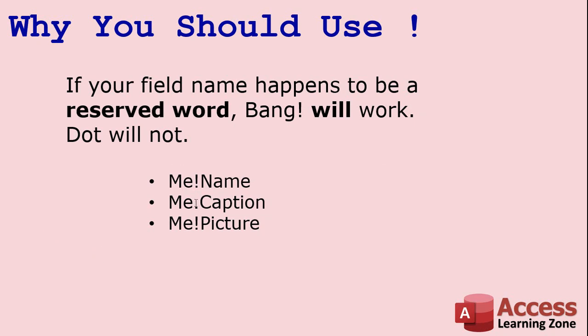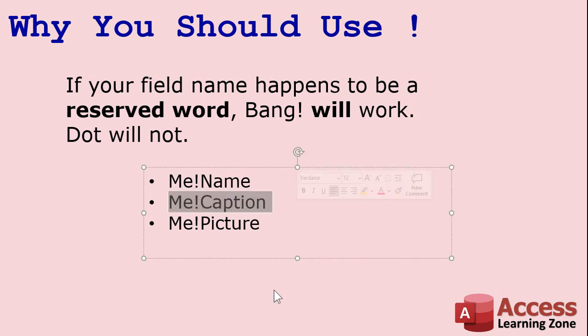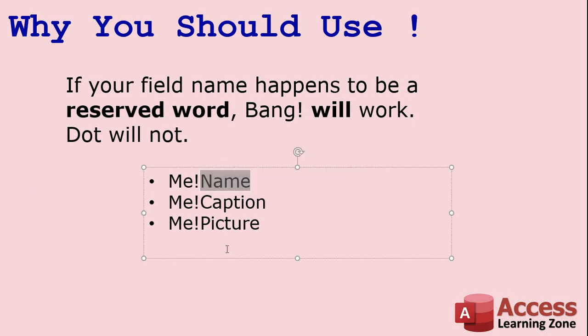Use the exclamation point instead — me!Caption will now correctly refer to the field on your form called Caption. Same thing with Picture. There are hundreds of reserved words; I'll put a link below to Microsoft's website. Name is one of the worst — never use "name" as a field name. FirstName and LastName are fine, but never just "name".